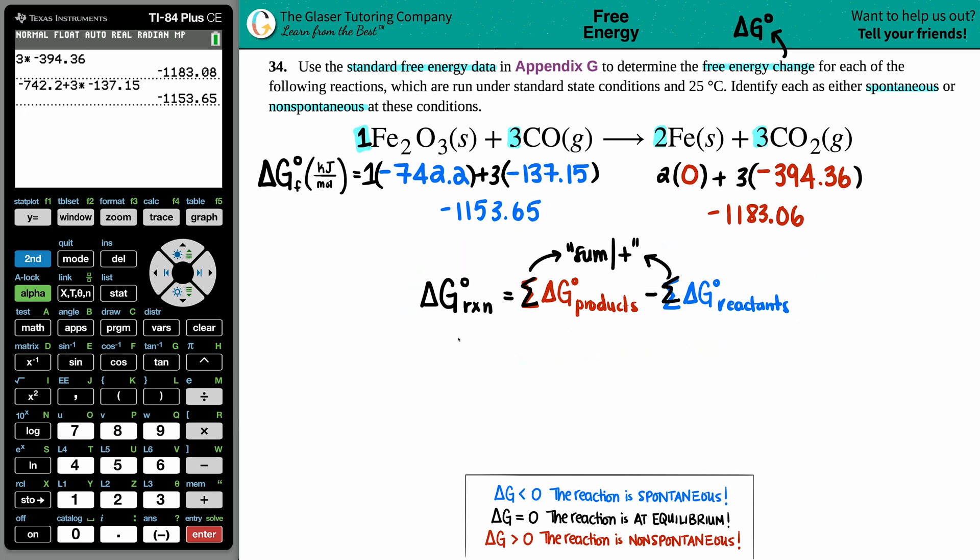Now I'm going to throw it into this equation: products minus reactants. Delta G of the whole reaction equals products negative 1183.06 minus reactants negative 1153.65. Let's find that delta G reaction. I press enter, minus, grab this number, enter. There you go. I got negative 29.43.